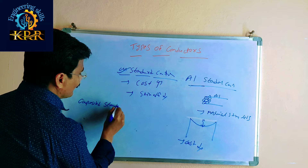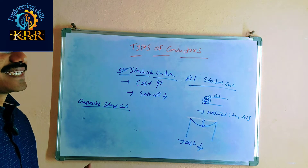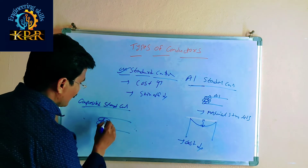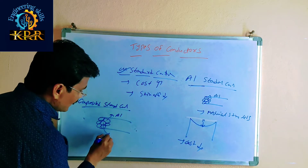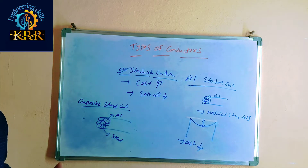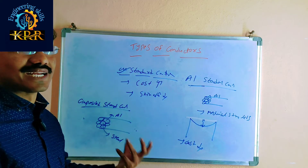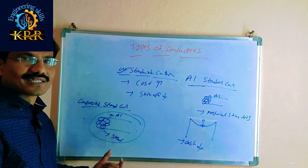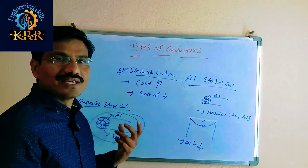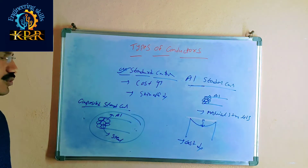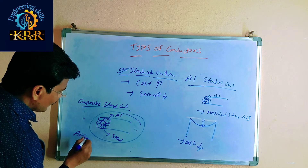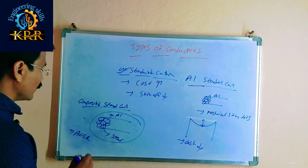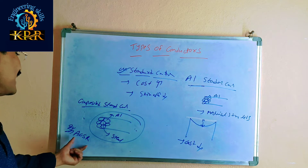In the composite stranded conductor, the outer strands are made with aluminum and the inner strands are made with steel. Aluminum has high conductivity, so the outer strands provide more conductivity. The inner steel strands provide more mechanical strength. Overall, the conductor has increased mechanical strength and increased conductivity. An example of this type is the ACSR conductor — Aluminum Conductor Steel Reinforced.